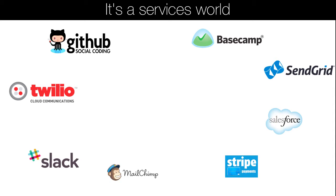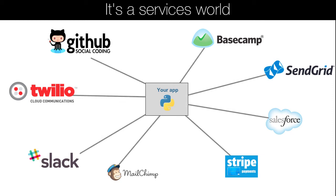We can query some backend business data using Salesforce, send out emails with SendGrid, or even manage and work with our projects through Basecamp. If we want to connect our app to these types of services and many more, we're going to need to learn how to work with services in Python. That's what consuming HTTP and SOAP services in Python is all about.